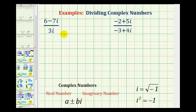When dividing complex numbers, or writing complex numbers in fraction form, we're not allowed to have i in the denominator. Remember, i is equal to the square root of negative one, so this rule is very similar to not having a square root in the denominator of a radical expression.